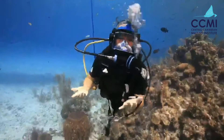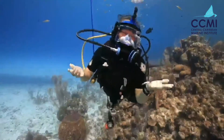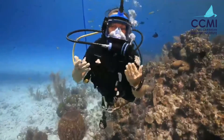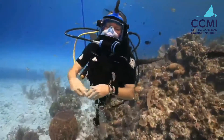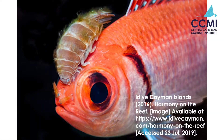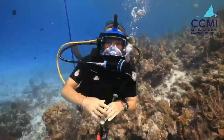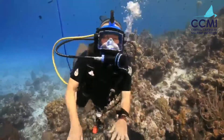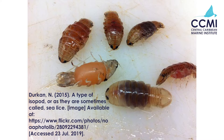These isopods can get to be about an inch and a half, two inches sometimes. They look like a giant pill bug or a roly poly bug. What they do is they attach themselves onto either the face of the fish or by the gills behind the head of the fish. Once they latch on — usually to a squirrel fish or a black bar soldier fish — they also start sucking that fish's blood.